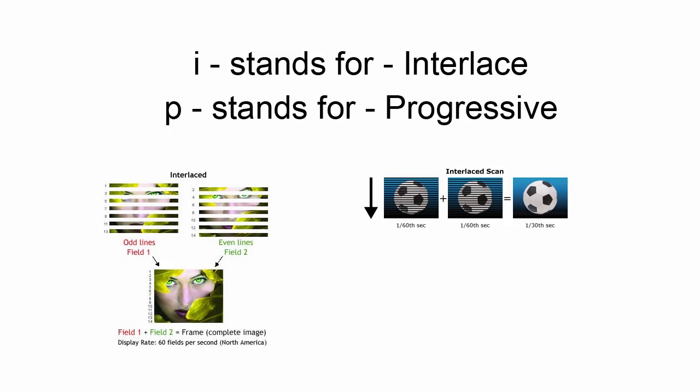Interlace images are actually not shown all at once. They're shown in parts. Now they're broken down into two parts, the odd fields and the even fields, essentially sections. And these sections are displayed individually. But they're done so quick that our eyes perceive one image.